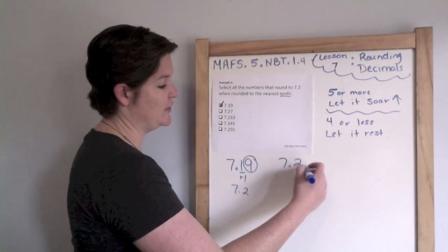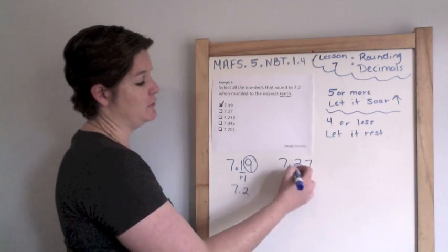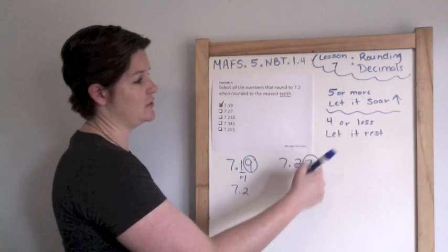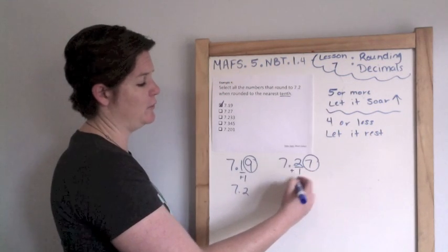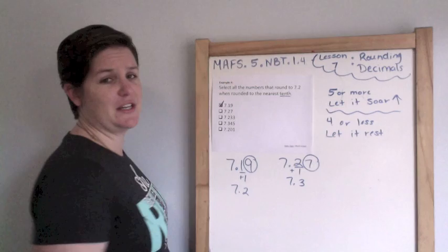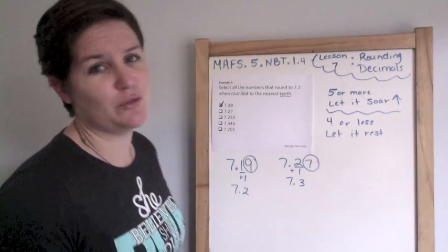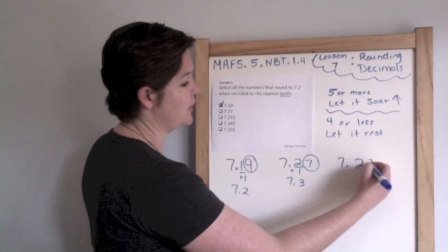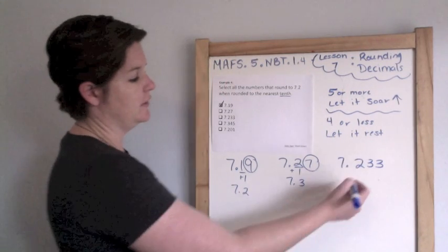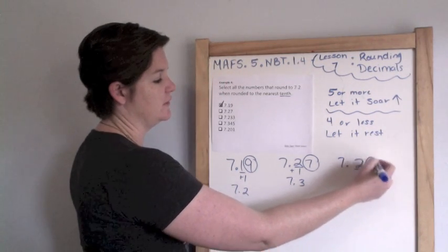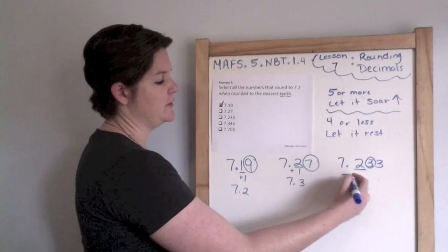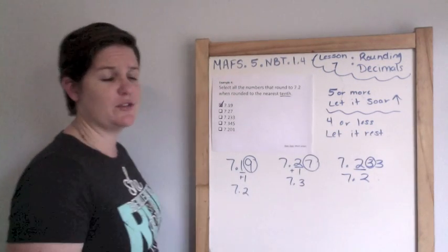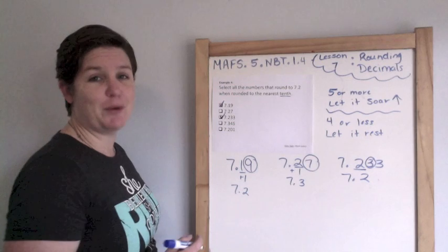Next, we have seven and twenty seven hundredths. Round to the nearest tenths place, look next door. That's let it soar, so we add one. That would be seven and three tenths. That is far too much. Now, seven and two hundred thirty-three thousandths. Nearest tenths, circle it. Let it rest so we still have seven and two tenths. Everybody mark it.